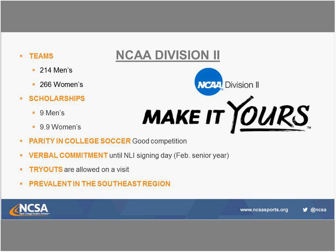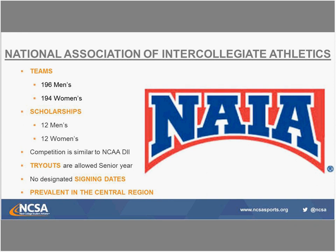Different division levels are prevalent in different regions. If you're having a tough time finding Division II programs in the Pacific Northwest, it's because there's not a huge contingency of Division II schools there — that's when parity in college soccer comes into play and you may want to look at a more competitive Division III or NAIA program. The majority of Division II programs are located in the southeastern region, and because recruiting is very regionalized, you're going to connect with coaches predominantly living in the southeast.